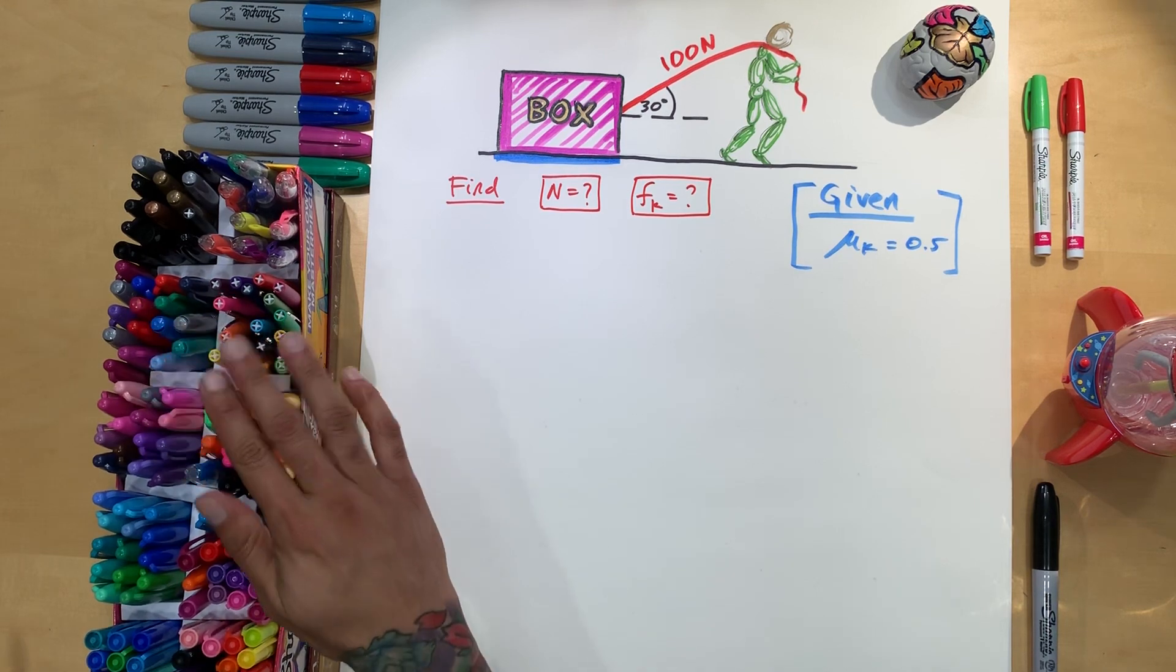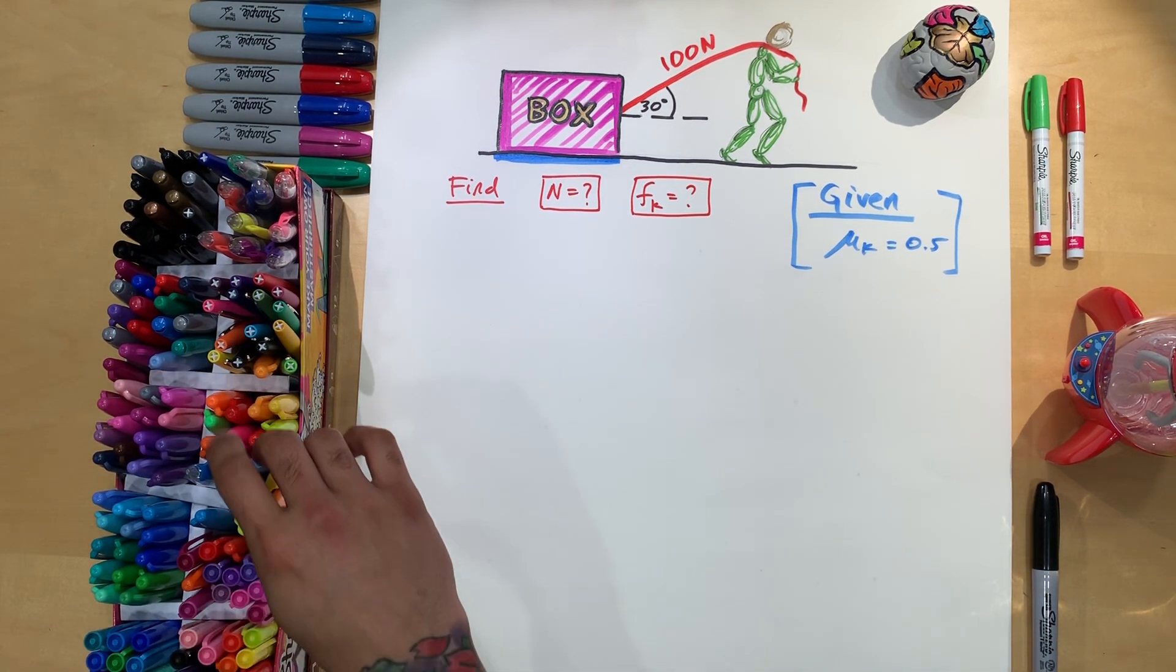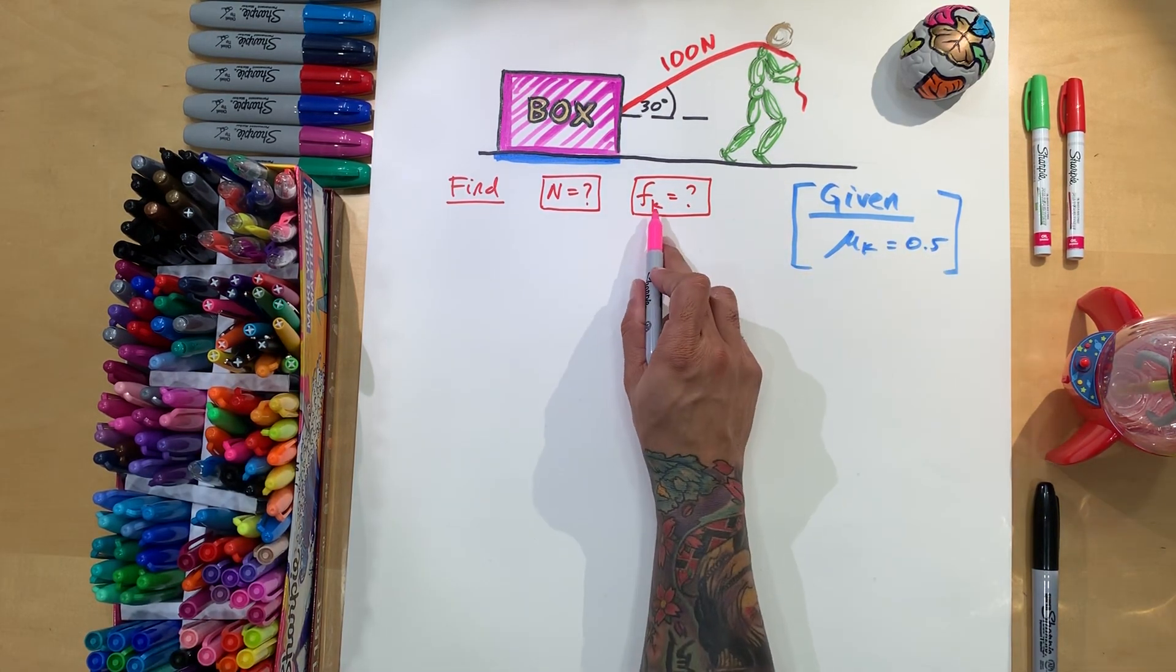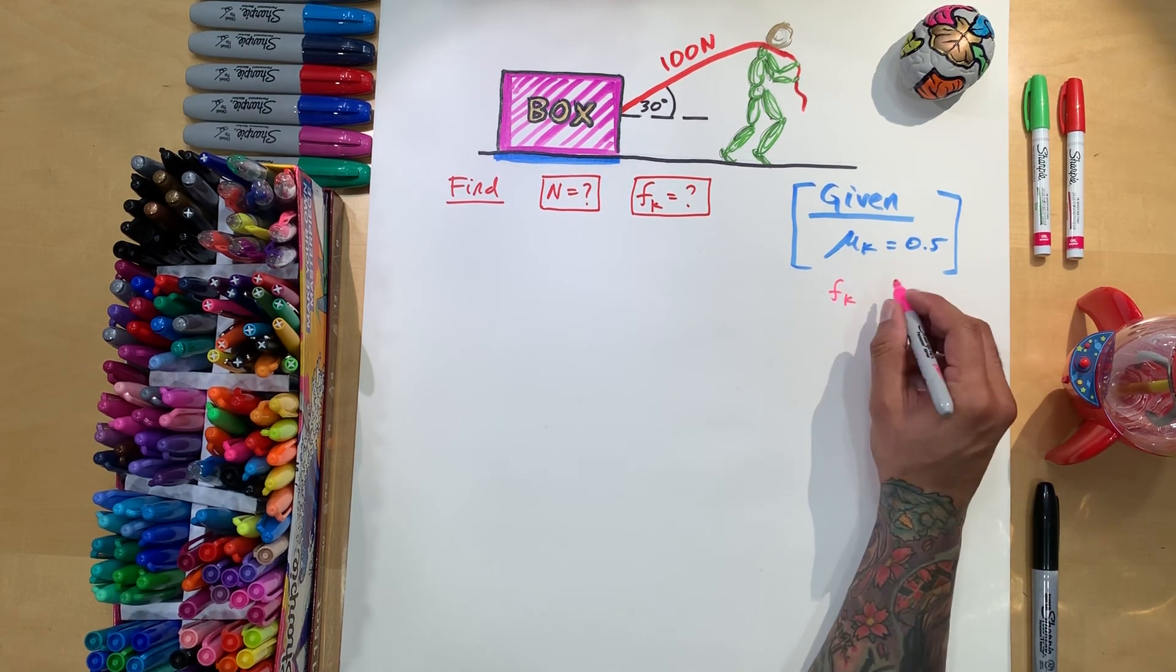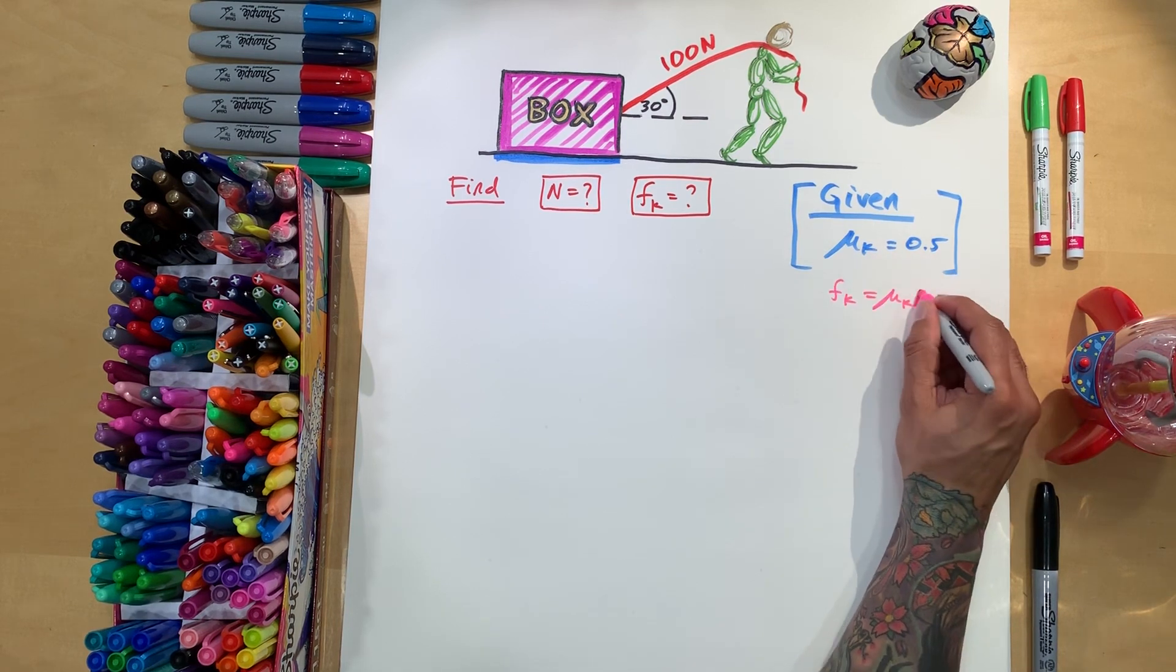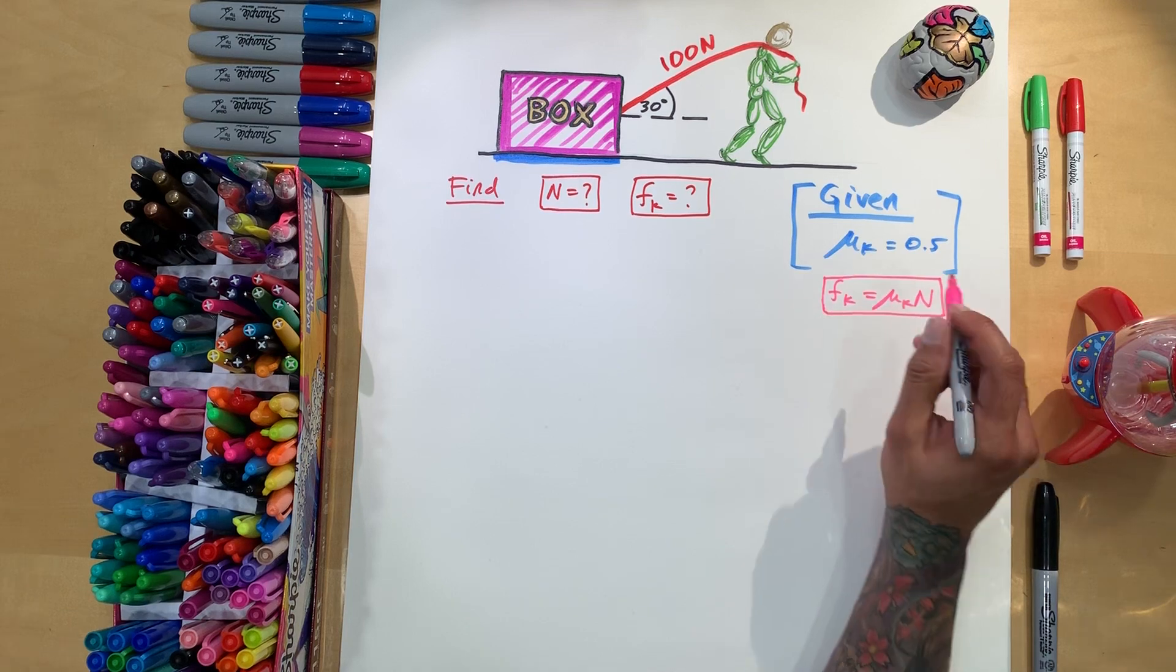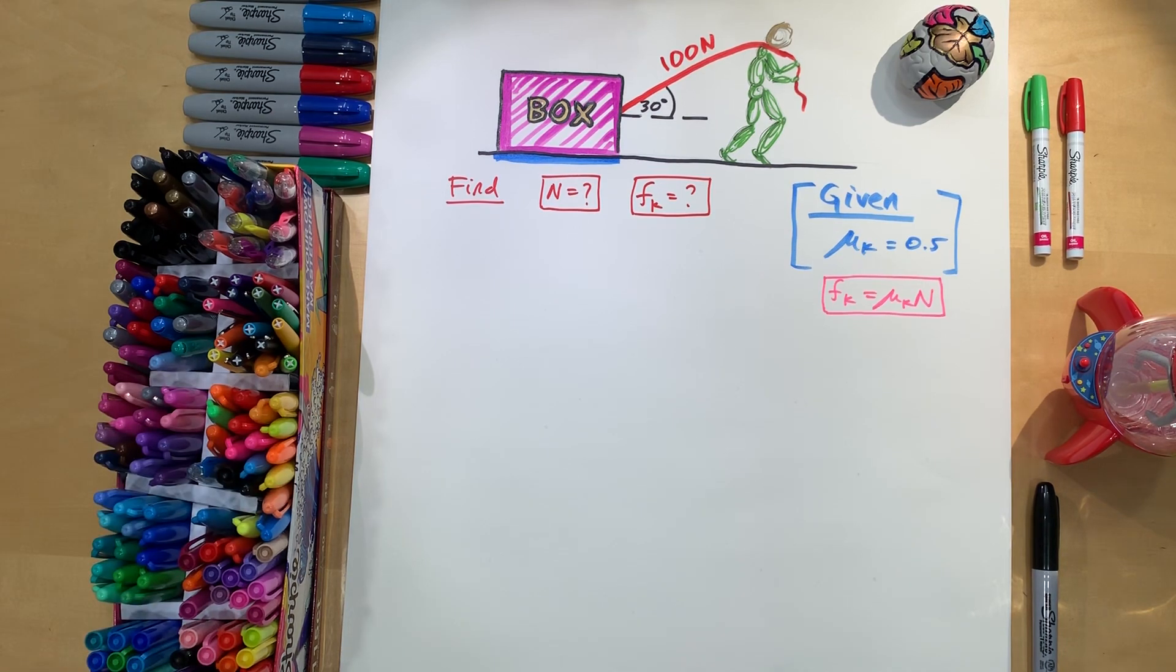So when I see that, immediately, I want to write down a formula just so I don't forget. So if I see that they want friction, kinetic friction, I know that kinetic friction is equal to mu k, which is what we have, times normal. And they're asking for normal, so it's going to be good. So let's start with the free body diagram.